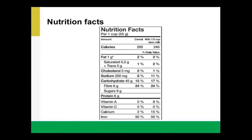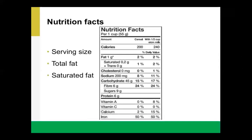The nutrition facts table will always look the same from one product to another, which should make it easier to find the information you're looking for. On this slide, we'll go through some of the key nutrients important for many cardiac patients. The most important thing to start with is the serving size. We'd also want to look at things like total fat, saturated fat, sodium, fiber, and sugar to help us choose a product.